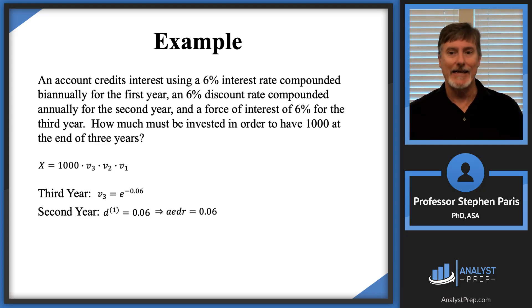So the annual effective discount rate is 6%. And now how do you get the V value from the D value? It's 1 minus D. So I take 1 minus the 0.06, and that will give me the periodic. In this case, it's annual. The 6% is the annual effective discount rate. So the annual discount factor would be 1 minus that, or 0.94. So for the second year, I got 0.94 is the V2 value, the annual discount factor for the second year.